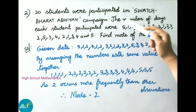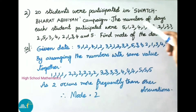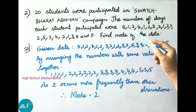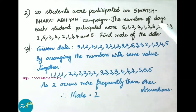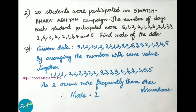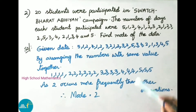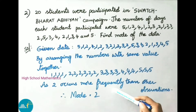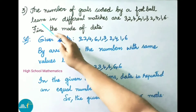Question 2: Twenty students participated in the Swaraj Bharat Abhiyan campaign. The number of days each student participated were 5, 1, 2, 4, 1, 2, 3, 2, 1, 2, 3, 2, 5, 3, 4, 2, 1, 3, 4, and 5. Arranging with same values together: 1 appears 4 times, 2 appears 6 times, 3 appears 4 times, 4 appears 3 times, and 5 appears 3 times. Since 2 occurs most frequently, mode equals 2.